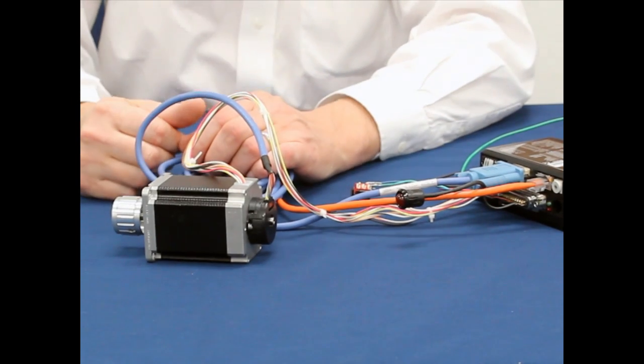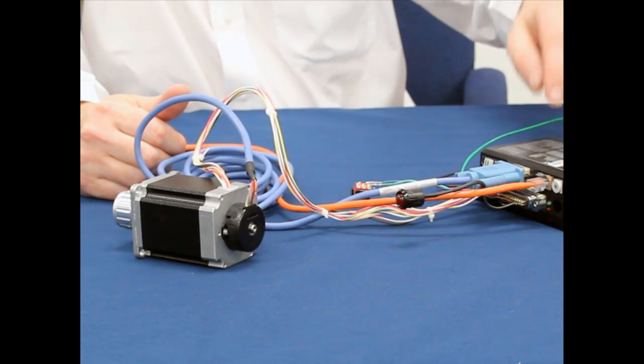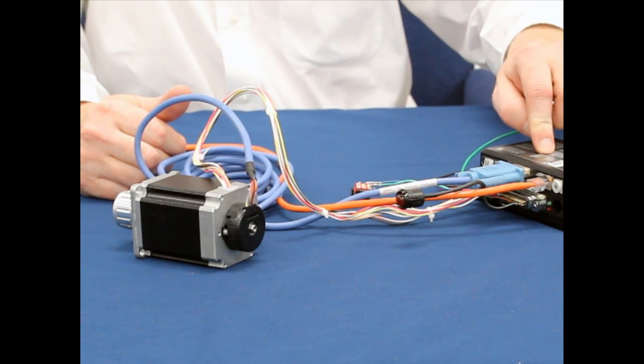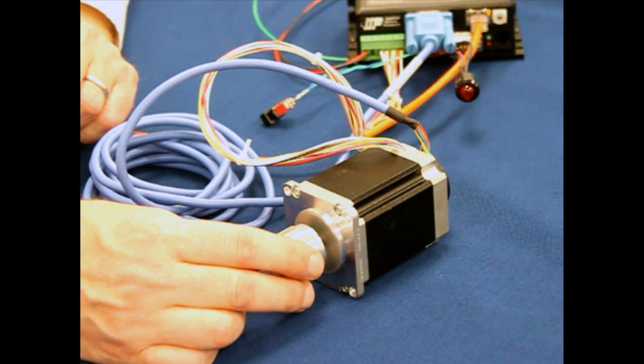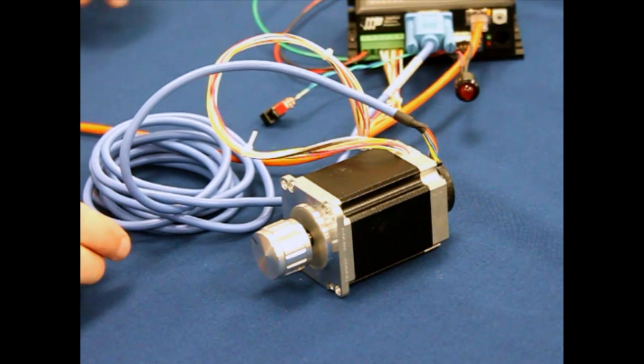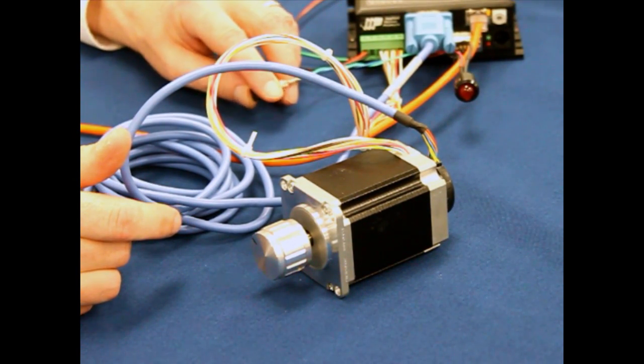Now let's see it work. I've connected the encoder on the back of this NEMA 23 step motor to an ST10Q driver. We've also mounted a knob on the front shaft of this beast so it'll be easier to stall. I'll watch what happens when I overload the motor by grabbing the shaft with my hand.